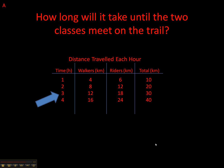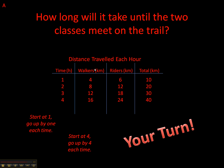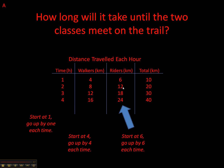Question A asks: what number pattern did Robin use to create each column in her table of values? The first pattern is start at 1 and go up by 1 each time. The walkers start at 4 and go up by 4 each time. Pause the presentation and find the answer for the next two columns. The riders start at 6 and go up by 6 each time, and the total starts at 10 and goes up by 10 each time.